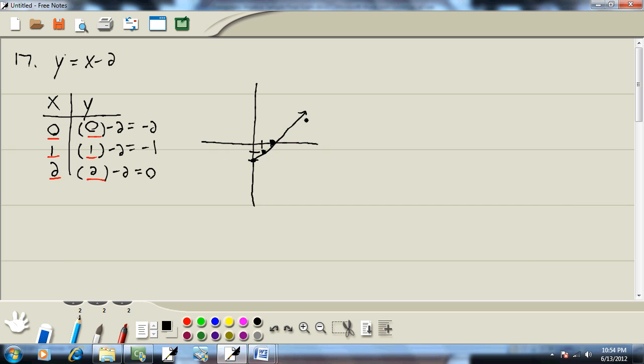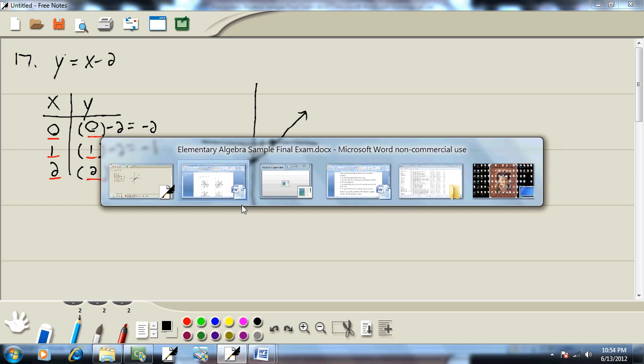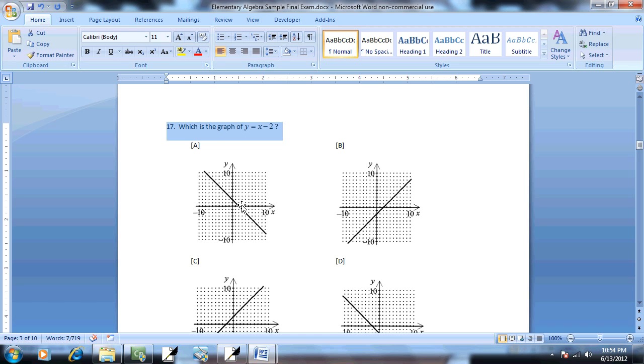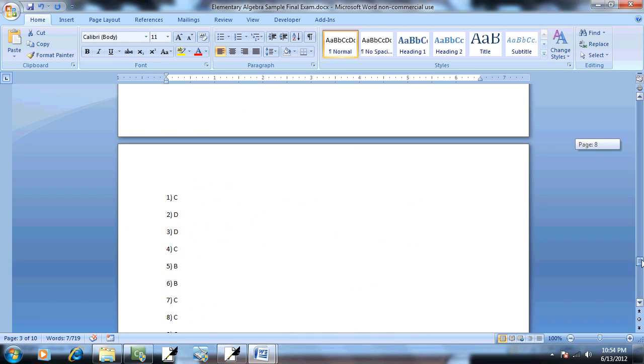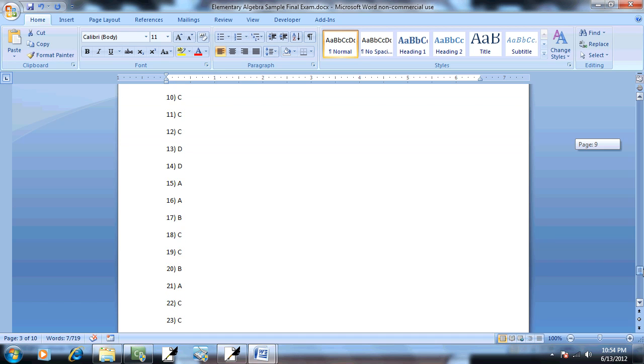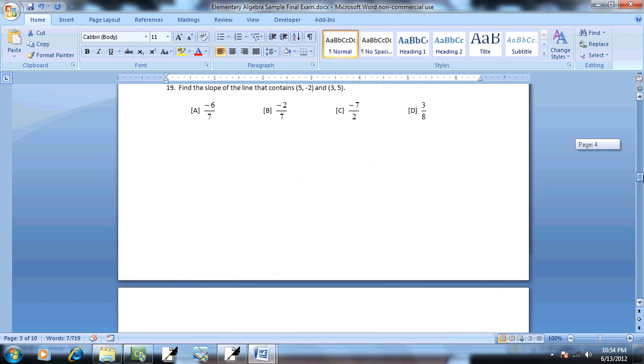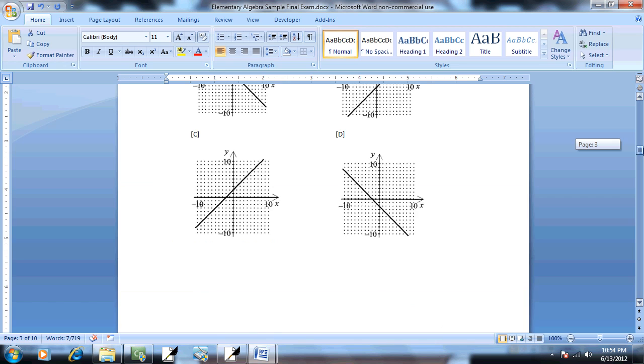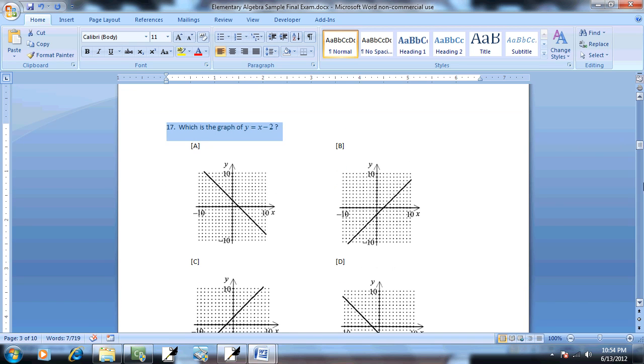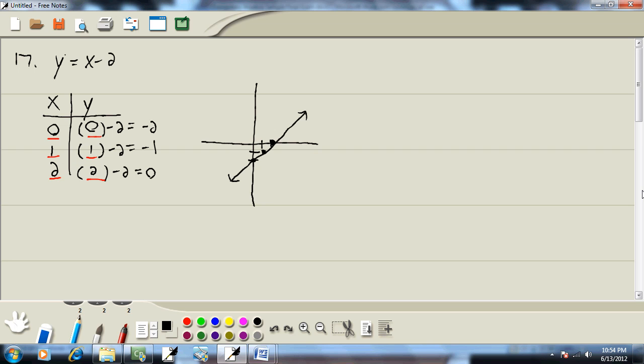Now, once you get those points, you draw a straight line through them. Not that I can draw a straight line. And that would be your answer. Now, let's look at this. Looks like b is in bill. So 17b would be your answer. And that checks.